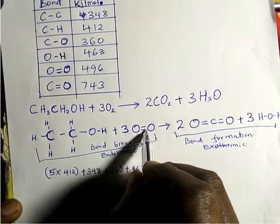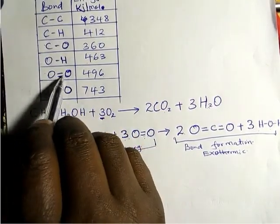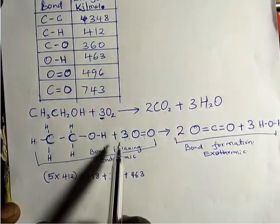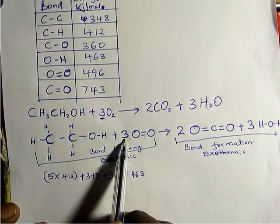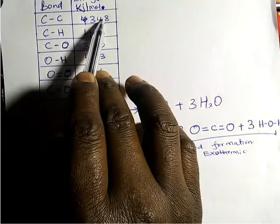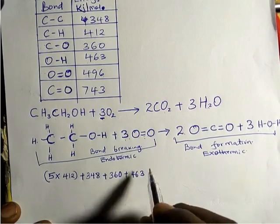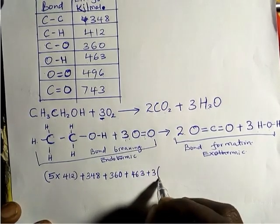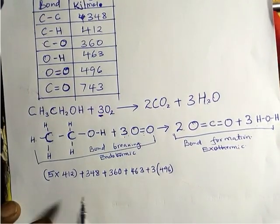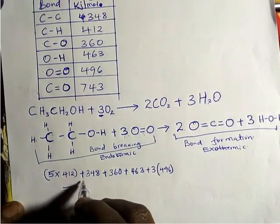These are three moles of oxygen gas, and the 496 kJ/mol value is per mole — that is why it was very important to balance the equation. Anyone who did not balance the equation will not score this part. So for three moles of O₂, that is 3 × 496. This gives us a total bond breaking energy of 4719 kJ/mol.